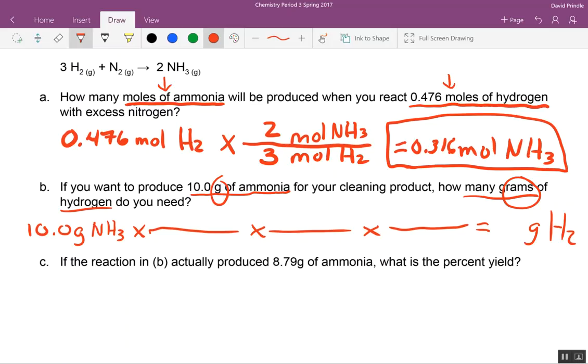So we start with 10 grams of ammonia. We want to get rid of the grams of ammonia and get to moles of ammonia. So how much is ammonia? What's the molar mass of ammonia? 16.023. I think you're off by one. So we'll call it 17.